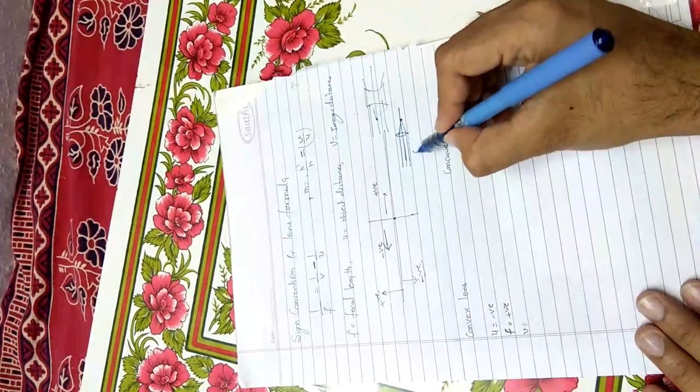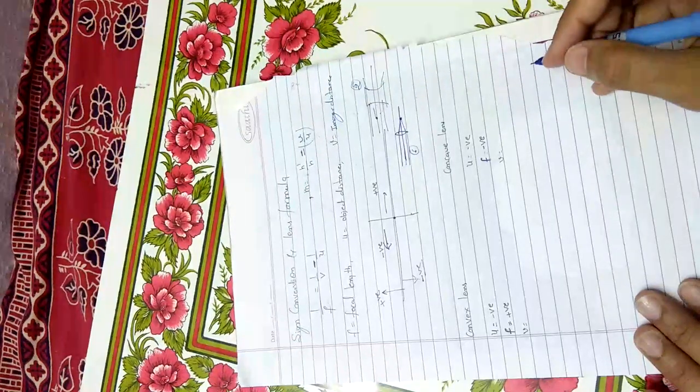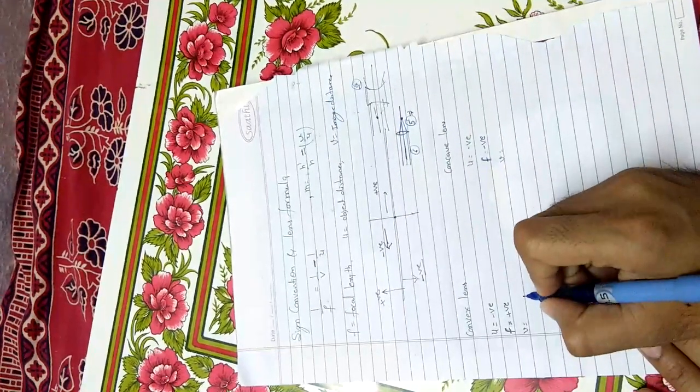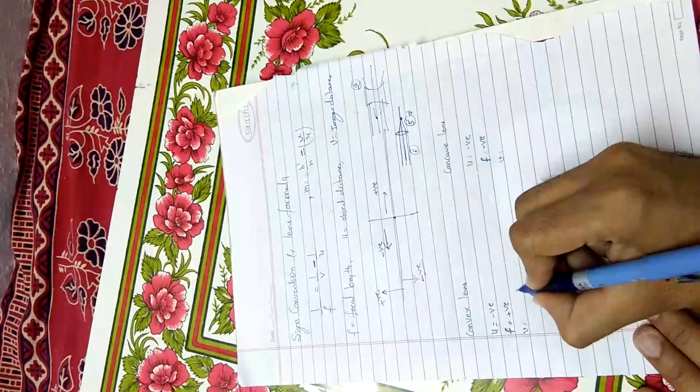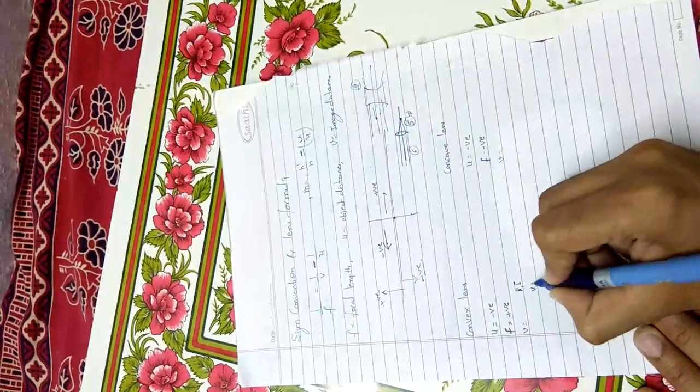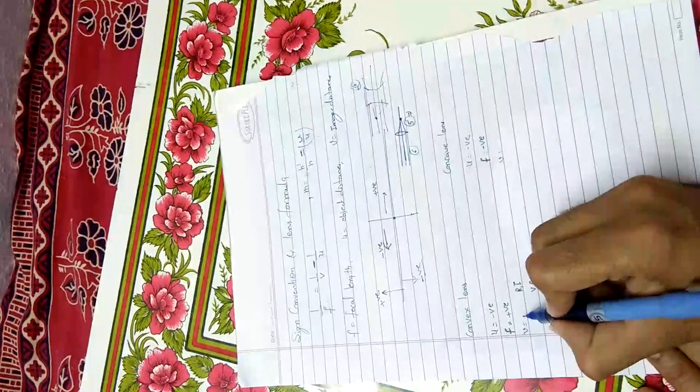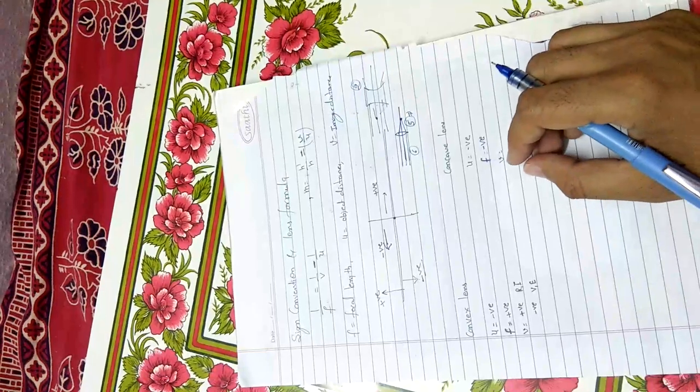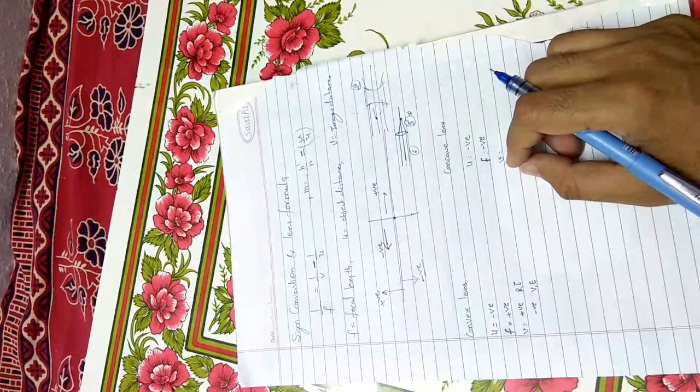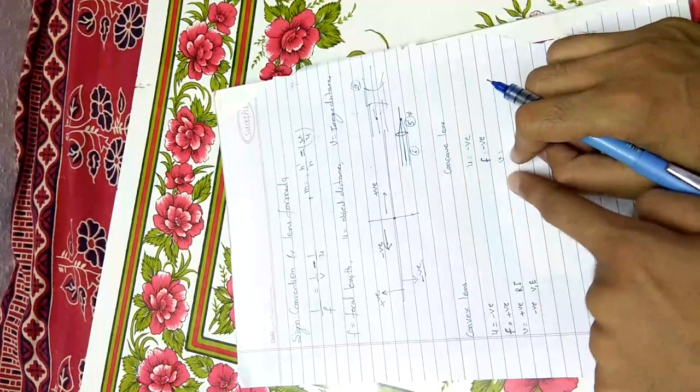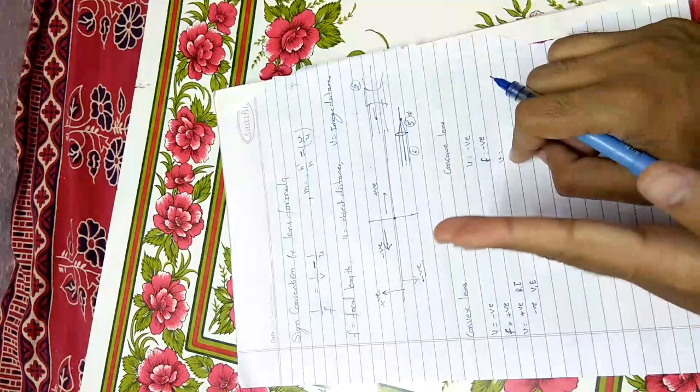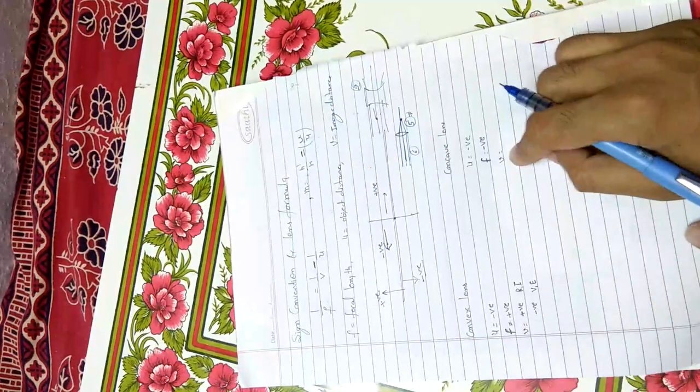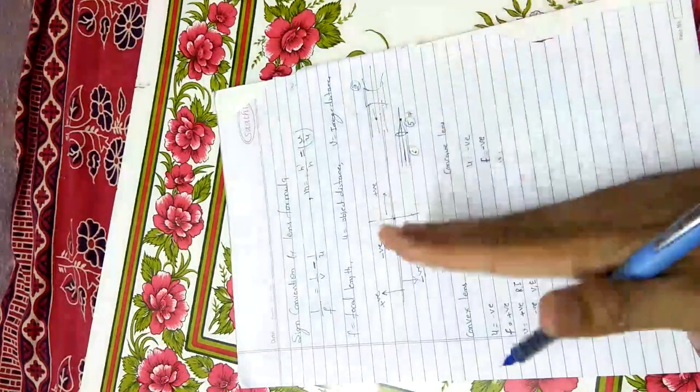Here we have six diagrams where we can see images. Five images are on the right side, and right side images are real and inverted. One image is virtual and erect. All the real and inverted images were on the right side, and the virtual and erect image was on the left side. You have to remember that here it works just opposite to mirror.